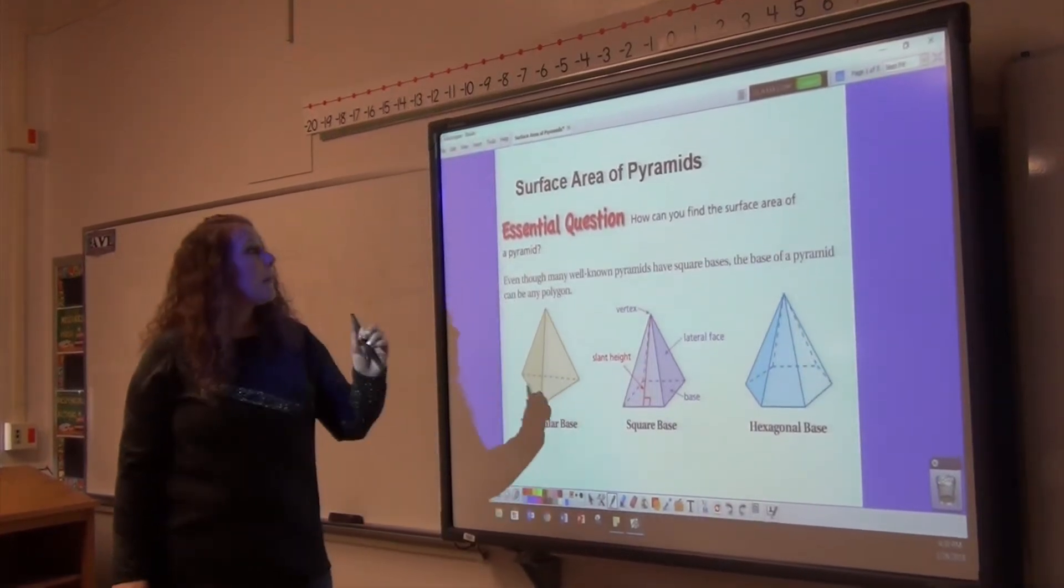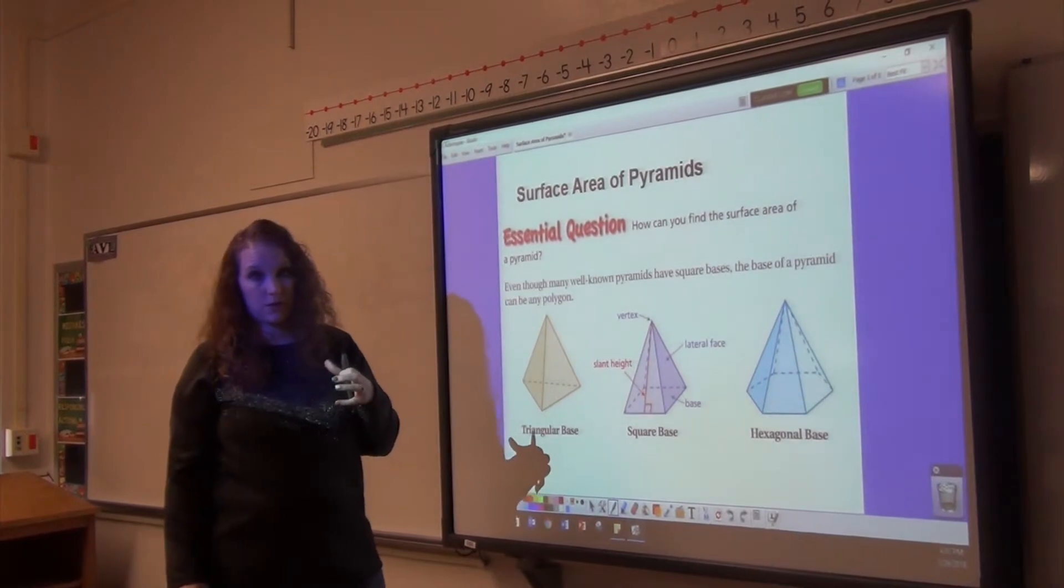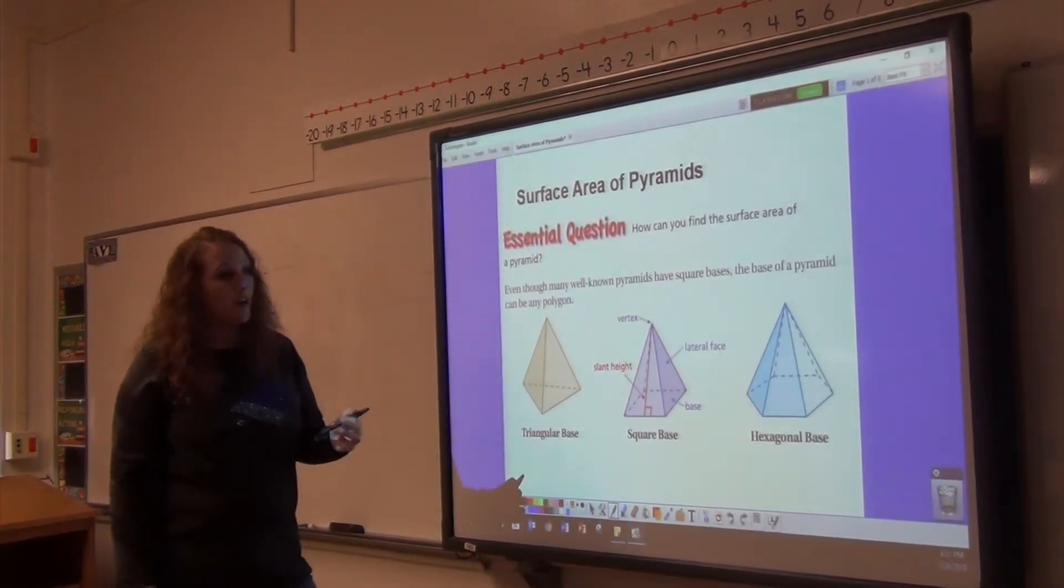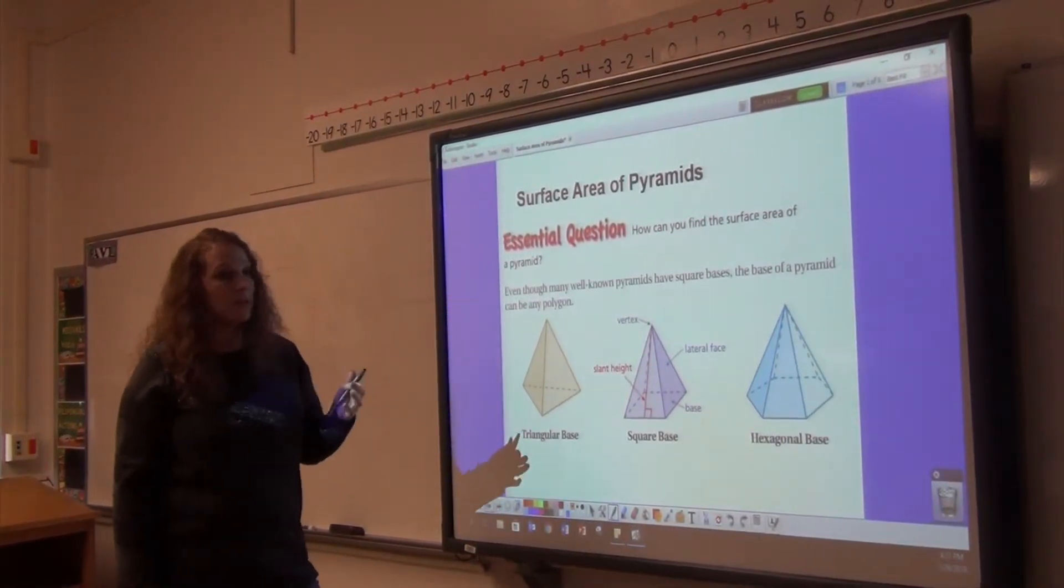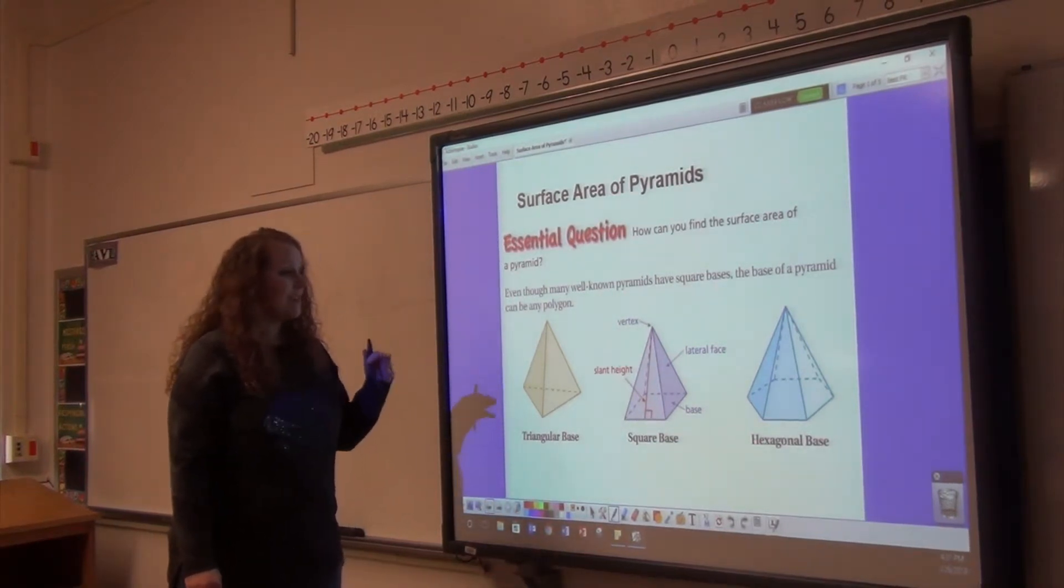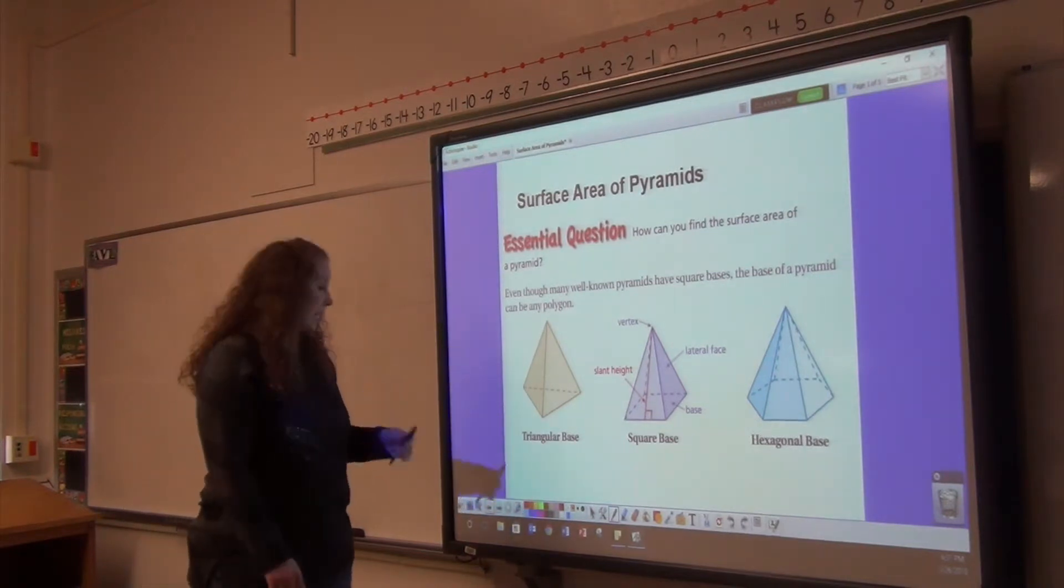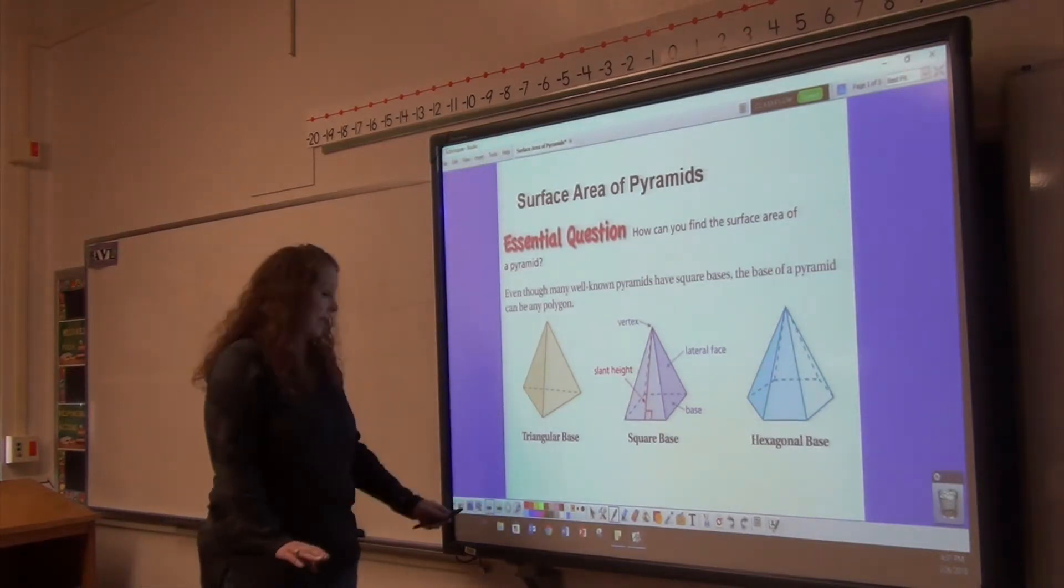Surface area of pyramids is really no different than any other surface area we've done so far. You find the area of each side and add them all together. Well-known bases for pyramids are triangles and squares. Sometimes you'll see a hexagon, not very often. Sometimes you'll see other polygons, but today we're going to focus on triangles and squares.